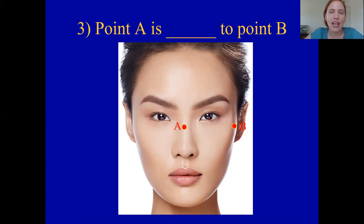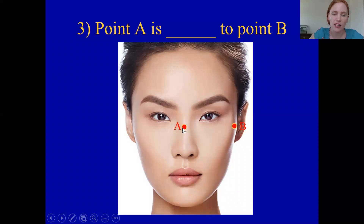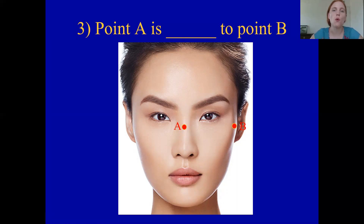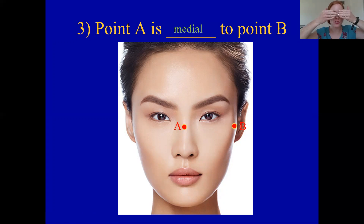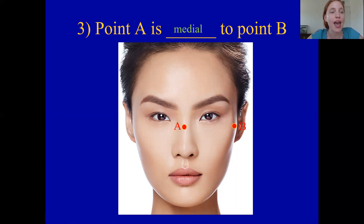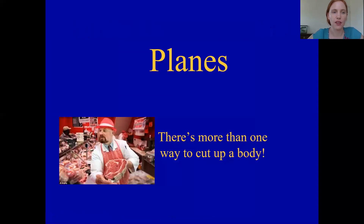Last one: point A is blank to point B. If we imagine a midline along the body, point A is right on the midline, so it is medial to point B. Medial means closer to the midline, lateral means further away. Point B is lateral to A, or point A is medial to B. That's enough for this piece — see you soon.